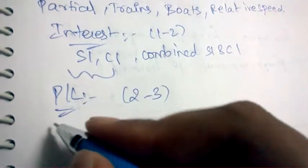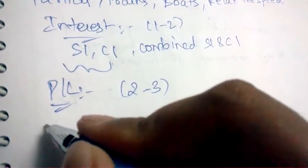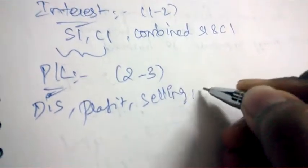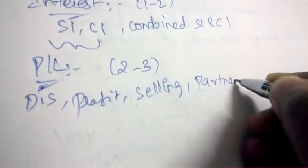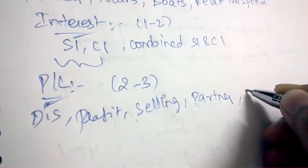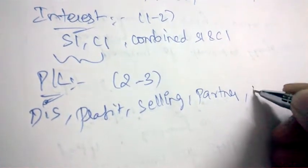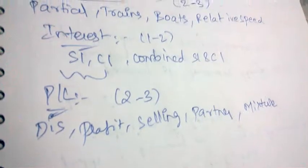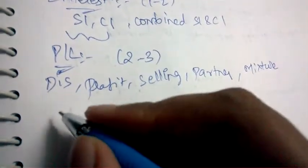The next topic is Profit and Loss — the weightage is 2 to 3 marks. They'll be asking you to calculate discount, profit, selling price, partnership, and mixture problems related to profit and loss.